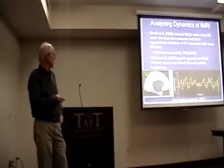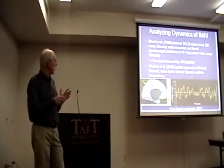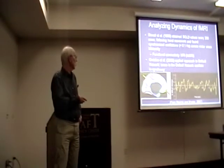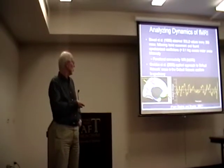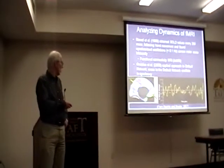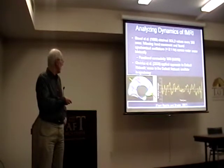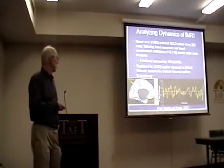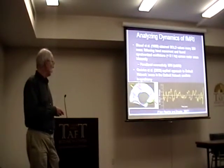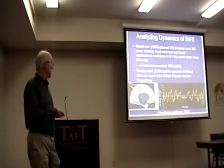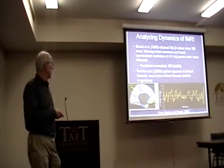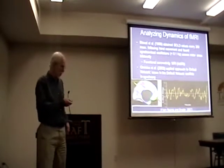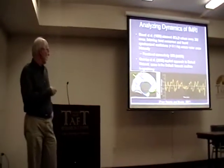What Raichle and his collaborators did was apply this approach to the areas characterized as the default network — the areas deactivated in most task situations. Looking at activity in the posterior cingulate and the ventral medial prefrontal cortex, they found very slow but synchronized oscillations in the fMRI signal across these areas. And that's just two of the areas.